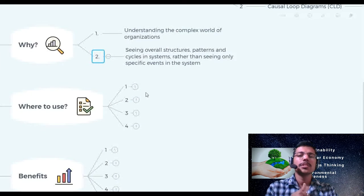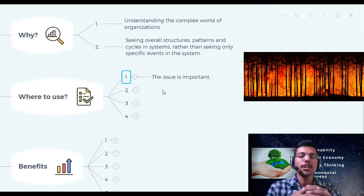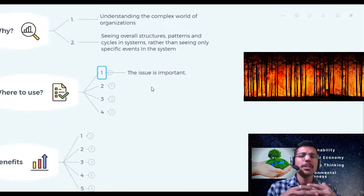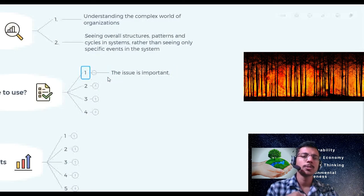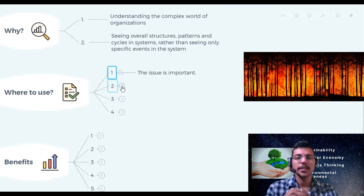Let's see about where to use it. The first point which we can call it as when the issue is important, just like global warming. Global warming, climate change, these are very important issues for all of us, for our earth. This kind of important issues we can work with systems thinking.